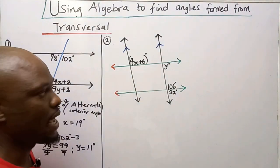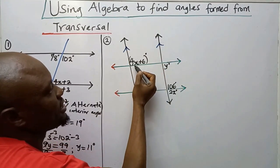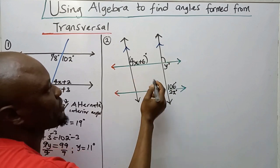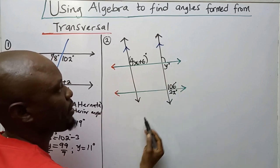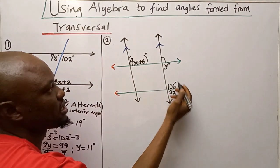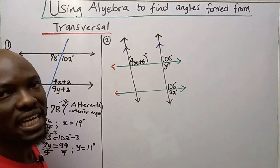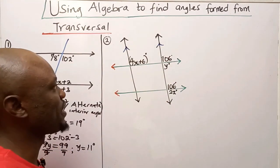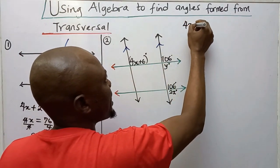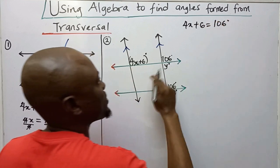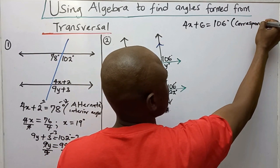Now for the second problem, I need to find X, Y, and Z. These two lines are parallel. At the top of the second line I have 106 degrees, so at the top of the first line I can get 106 degrees as well. The reason is corresponding angles — they are in the same position, so they are equal. Therefore 4X plus 6 equals 106 degrees.